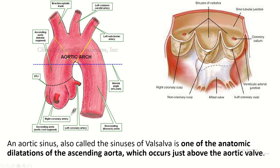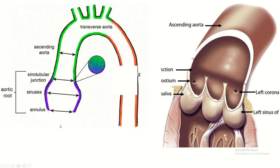This is the ascending aorta, arch of the aorta, and descending thoracic aorta. If we cut the root of the ascending aorta, internally it looks like three dilatations. This is the aortic bulb, and these are the external dilatations — the aortic sinuses — and the openings of the coronary arteries. This is the external dilatation; this is the aortic sinus. This is the origin of the left coronary artery, and this is the origin of the right coronary artery.